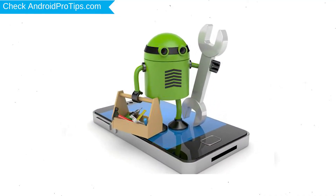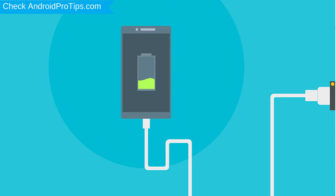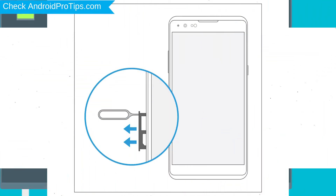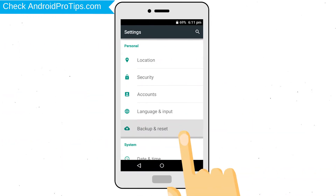Before resetting your mobile, your battery must be above 50%. Remove SD cards and SIMs. Back up your Android mobile data if possible.